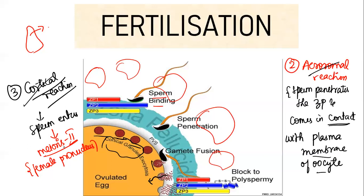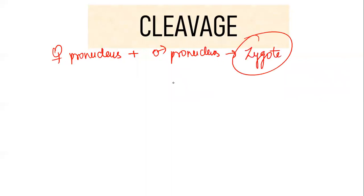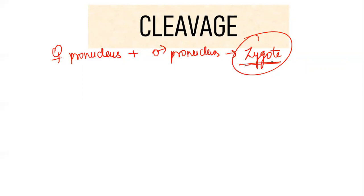Simultaneously, the sperm nucleus matures and forms the male pronucleus. As a result of formation of both pronuclei, the female pronucleus and the male pronucleus fuse, leading to the formation of the zygote. The formation of the zygote is called fertilization. To summarize: capacitation → acrosomal reaction → cortical reaction → sperm penetrates cytoplasm → meiosis 2 completes → female pronucleus and second polar body formed → male pronucleus formed → both fuse → zygote formed. This ends fertilization.